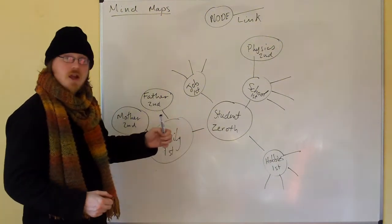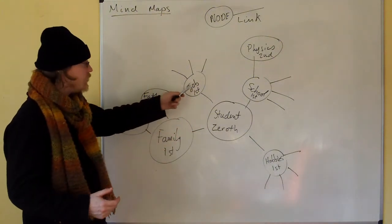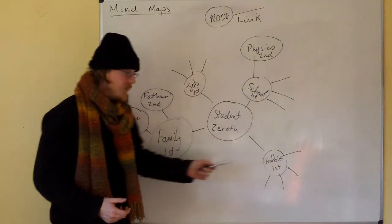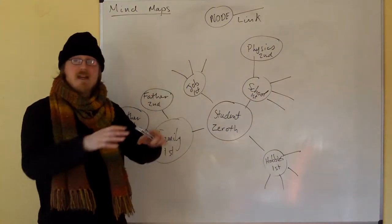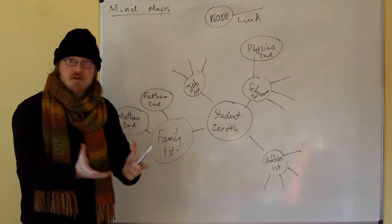Then go out from there and include things like your job, your school, your hobbies, your family, and any other major aspect of your life, any other major dimension in your life. You make that a first order node.